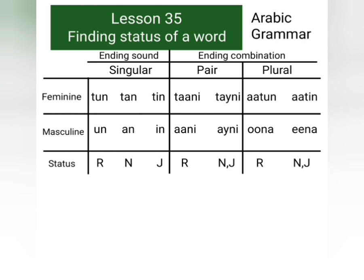Feminine plural words with ending combination atun have the status rafa, and feminine plural words having ending combination atin can have the status nasab or they can have the status jar.